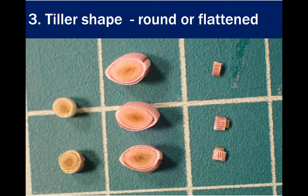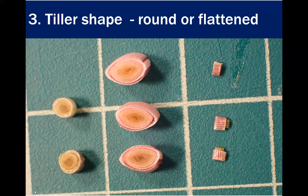One key vegetative character is the shape of the tiller in cross-section at the base of the plant. There are three shapes: completely round, kind of oval or two-sided or flattened, and very skinny or flat. These are things you feel with your fingers at the base of the plant. This will be used in the vegetative key for those five grasses.